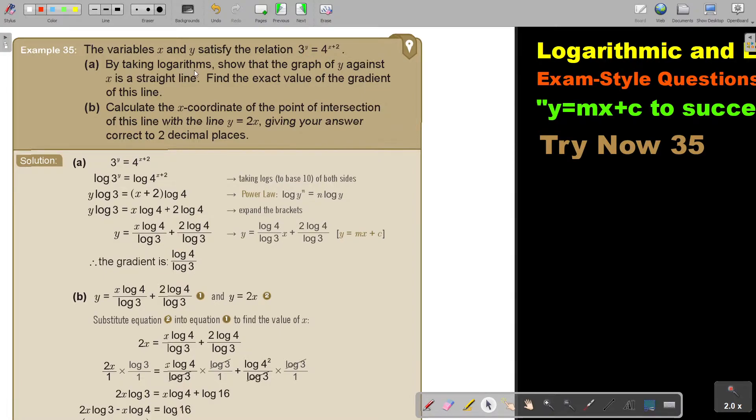By taking logarithms, show that the graph of y against x is a straight line. Find the exact value of the gradient of this line.